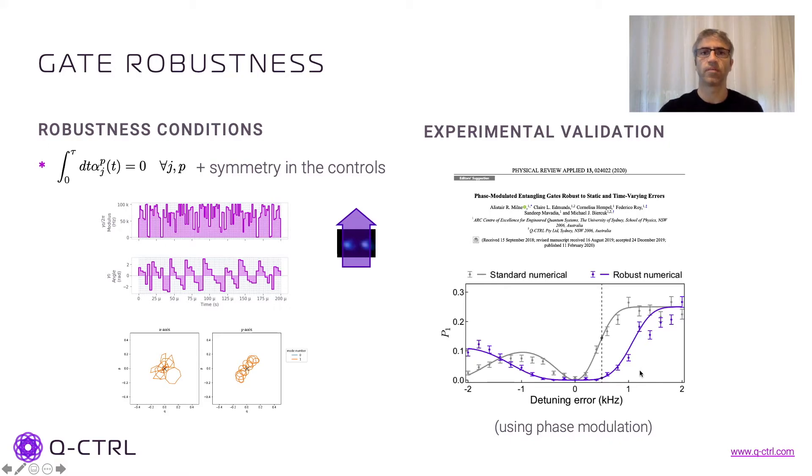And what we see here, for example, is that close to zero here means good, low infidelity, and the wider range here of this flat region indicates that our solution is more robust to detuning errors.